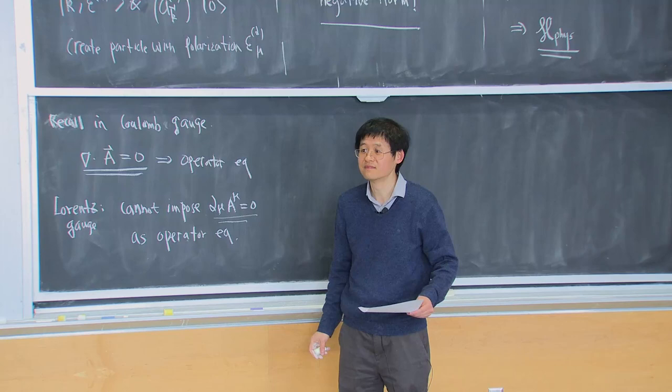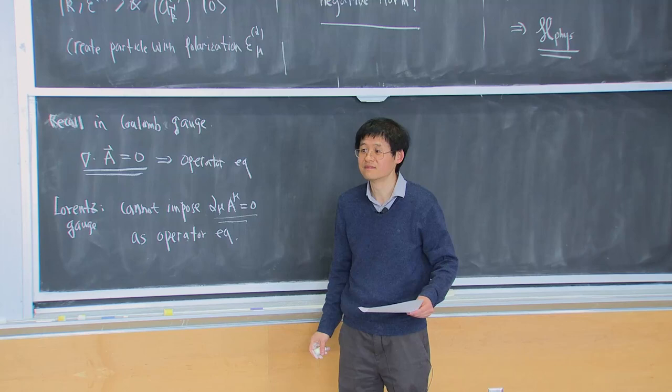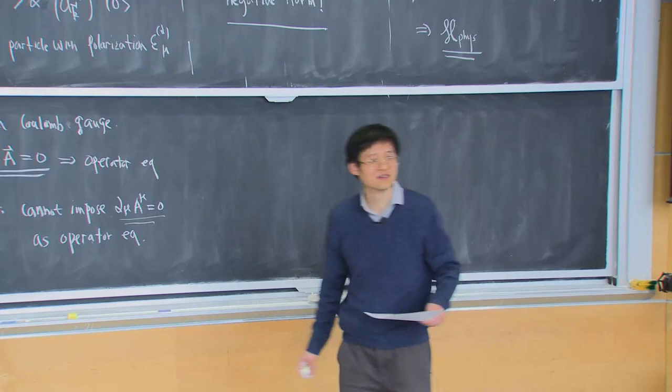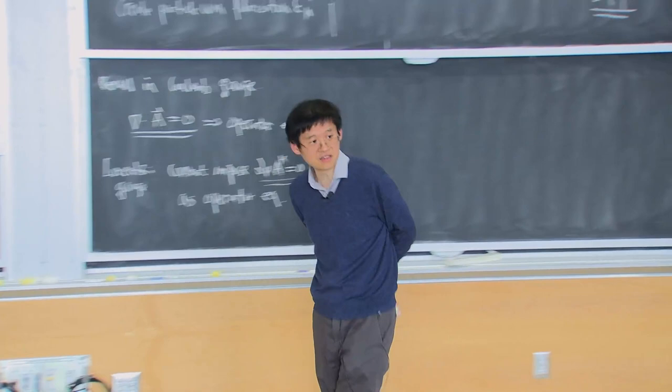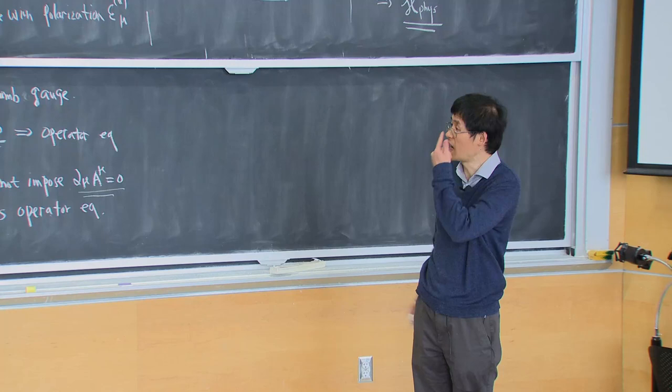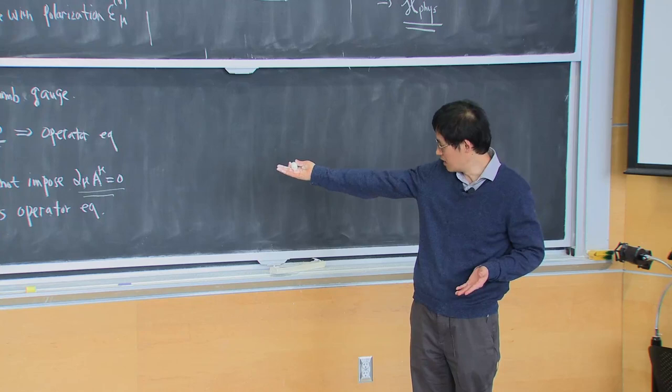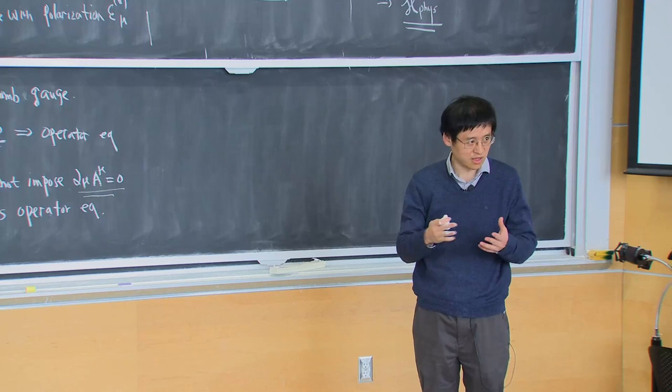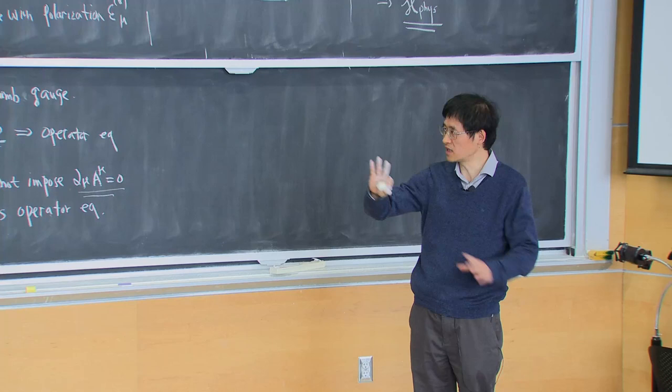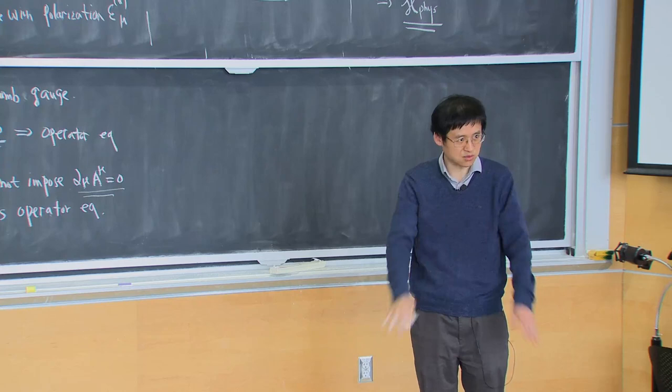Student question: Why can't you just fix the gauge at the classical level? Classically it does not matter, but quantum mechanically, as you will show in your problem set, if you impose partial_mu A^mu = 0 as an operator equation, that is incompatible with the canonical quantization conditions. Here I just motivate that classically, in order to ensure this, you only need to impose the boundary condition, not as the equation of motion.